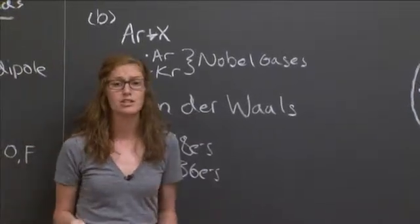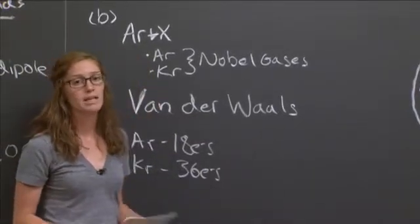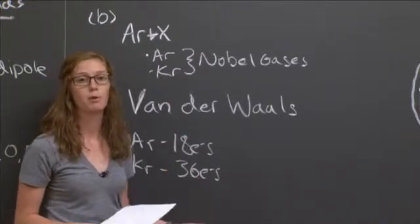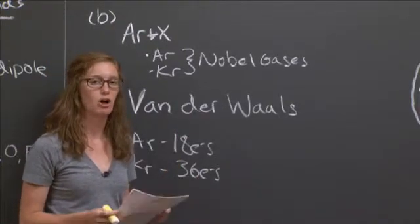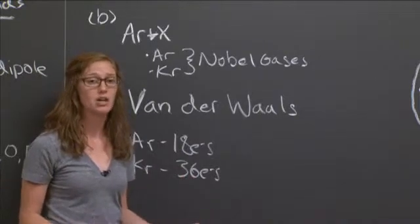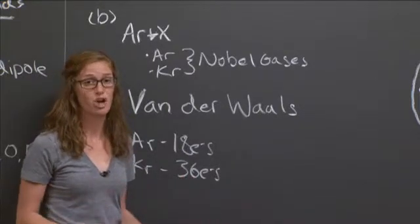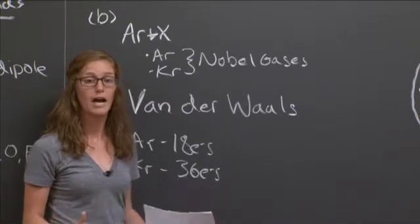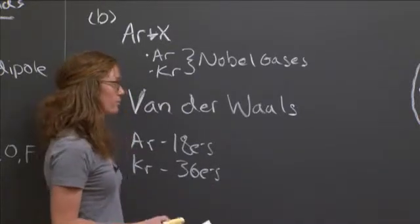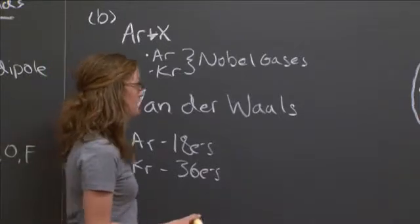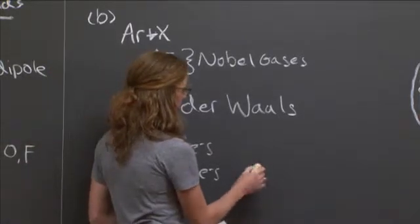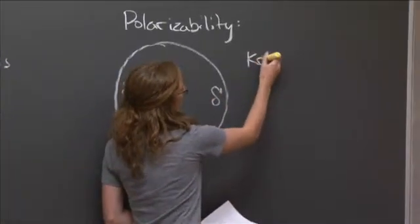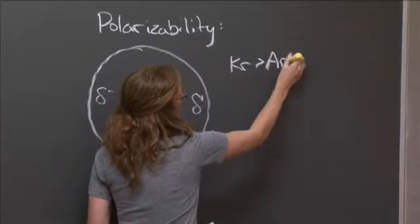So based on our discussion of polarizability, we can see that krypton is going to have a greater amount of polarizability because it has a larger cloud of electrons. Those electrons are bound less strongly. As we know from our periodic trends, krypton is a larger atom. And so we are going to say that the polarizability of krypton is greater than argon.